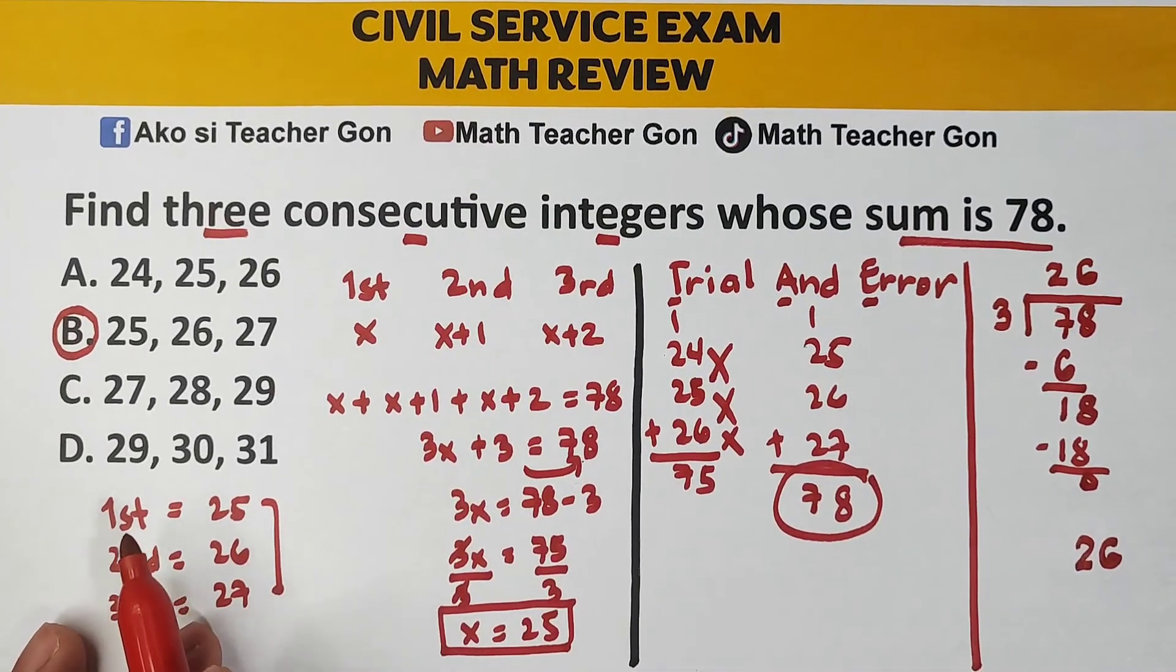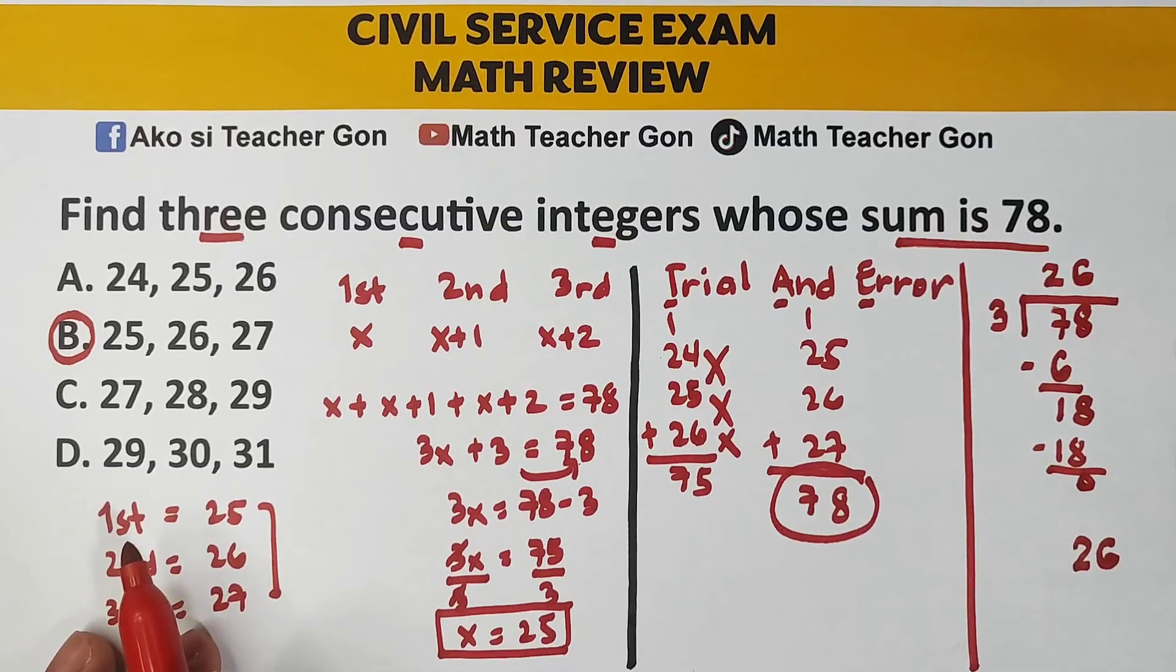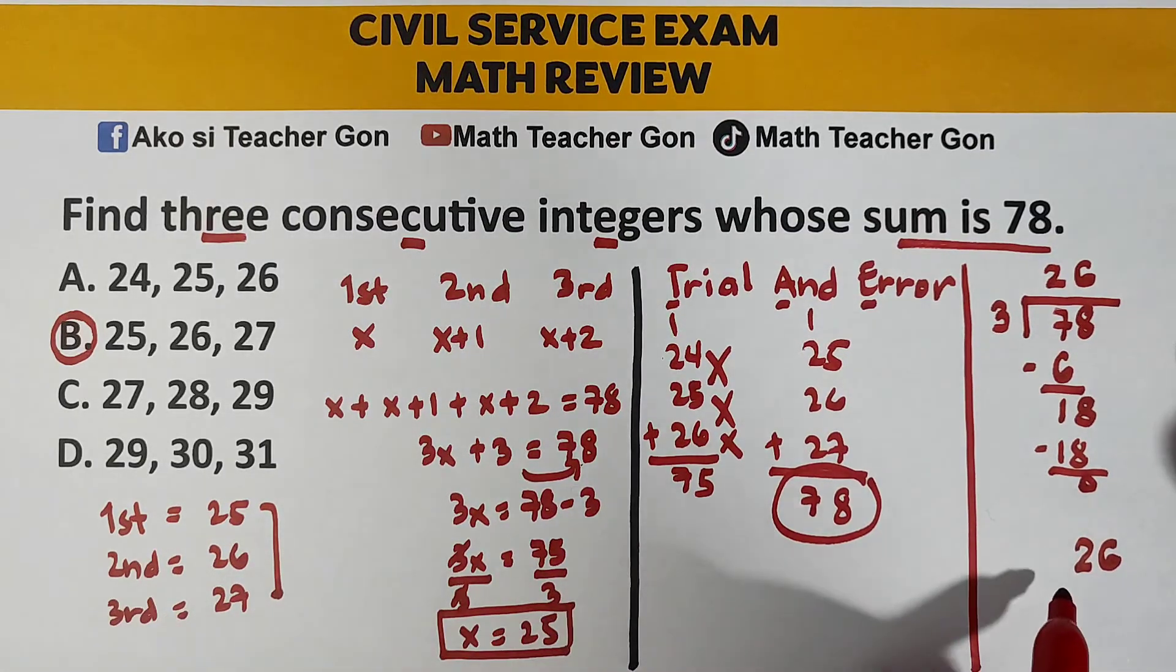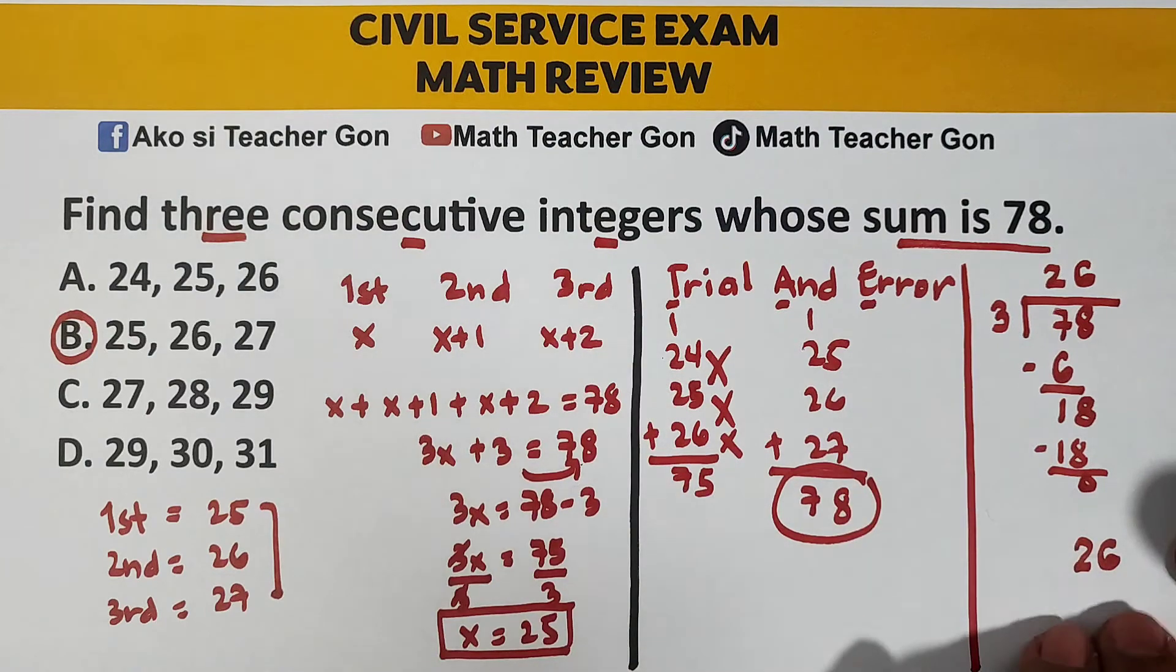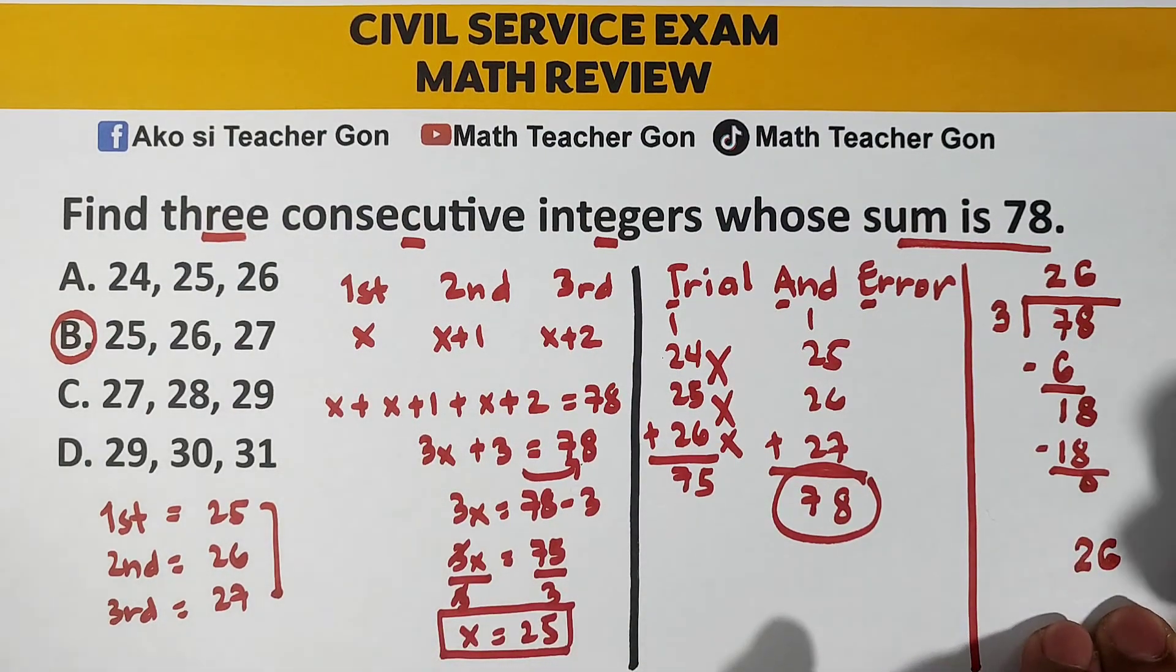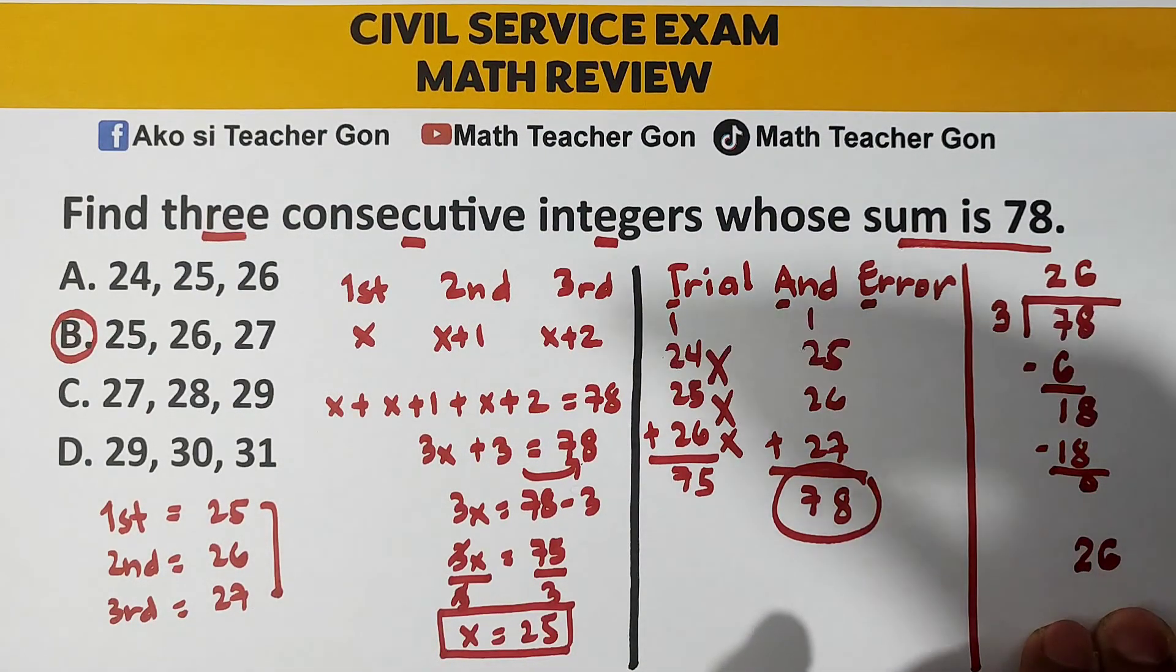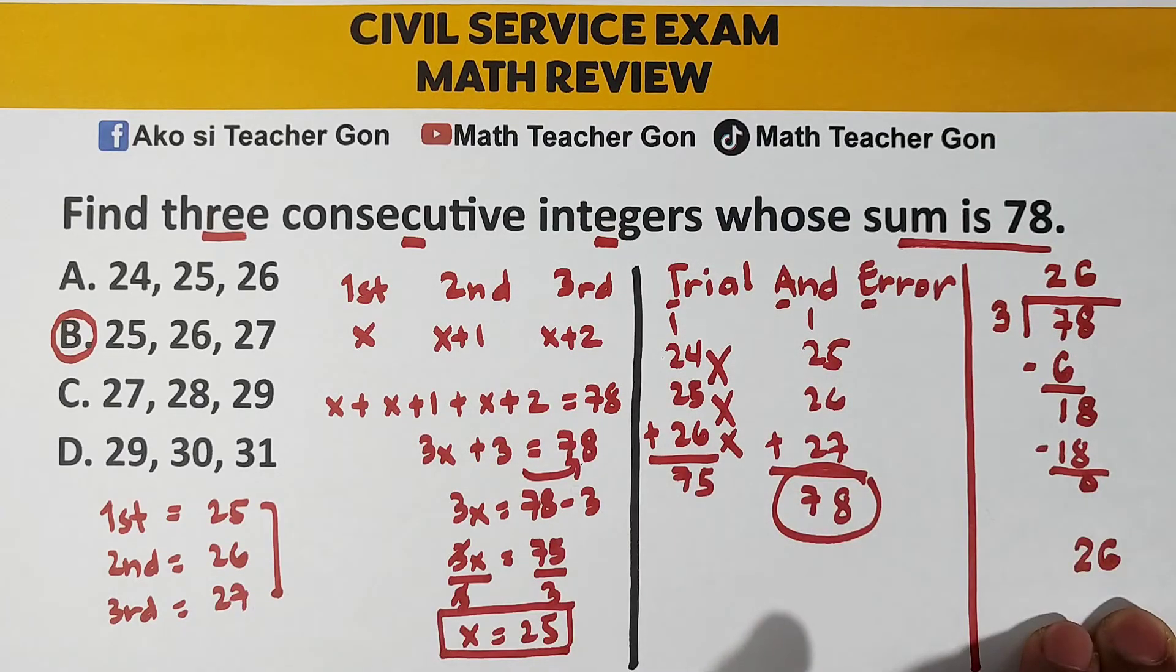yung 26 is the average or middle. Ito yung sa gitna. So, adjust natin yan. Meaning, para makuha mo yung first and third. Again, yung 26 will serve as the middle of the 3 integers.